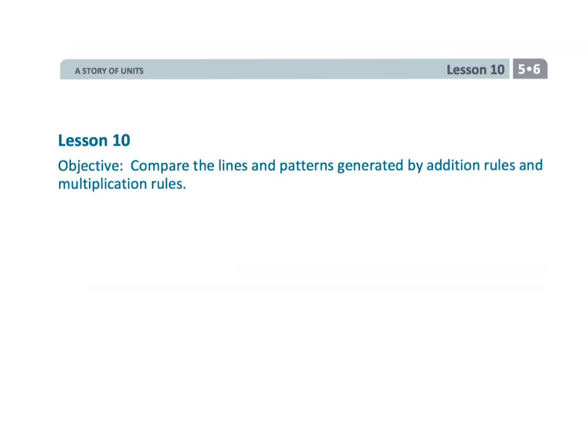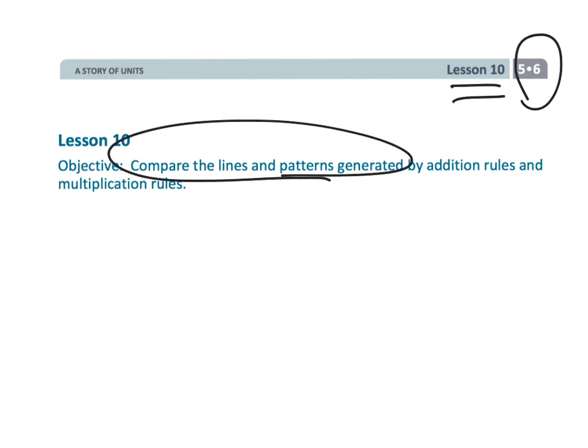That wraps up a tough one — fifth grade module 6 lesson 10. We're comparing lines and patterns generated by rules: some involve multiplication, some involve addition. We also hypothesized about other rules. Really a good lesson!